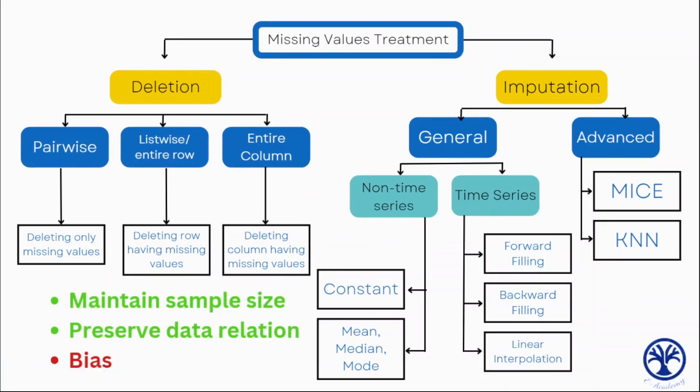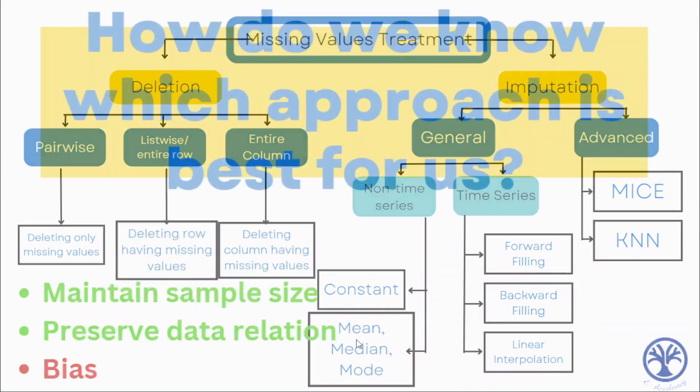All in all, imputing missing data involves replacing the missing values with estimated values. As we have seen, there are plenty of approaches from general to advanced. Talking about pros and cons, this method can maintain sample size and preserve relationships in the data, but can also introduce bias if the imputed values are not representative of the true values.